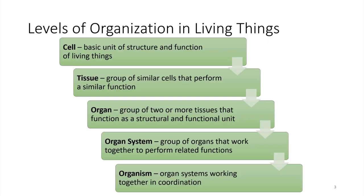Living things are amazingly organized, and what I'd like to do is just review that organizational scheme that comes up in pretty much all living things. We're going to be focused on the human body in this class, but this is a true organizational scheme for life in general. The smallest unit of life that we know about is the cell, and the cell has organelles inside — we'll be seeing that in a later chapter, but for right now let's just look at this overall layout.